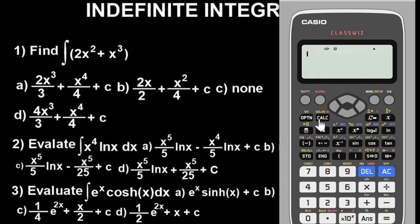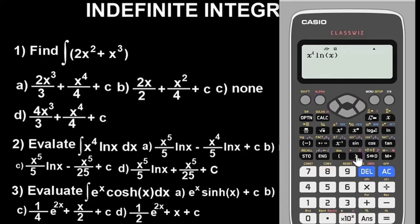We don't need to clear the calculator because we are still working with the x = 2 we already stored. To simplify this integral, input x · alpha(x) to the power of 4, times ln(x) · alpha(x). Close the brackets and press equals — we get approximately 11.09.